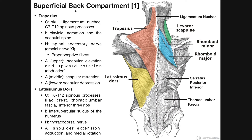Let's begin by looking at the superficial back compartment. These are all muscles located on the back; however, the superficial back muscles and the intermediate layer are not true back muscles. The true back muscles are more like the erector spinae muscle group, which is deep to all of this and actually moves the spine — it's involved in spinal extension. These superficial muscles instead move other things, like the scapula or the humerus, so they're on the back but don't move the back.